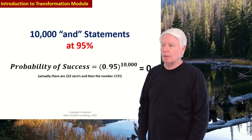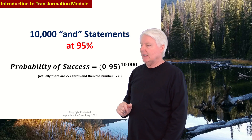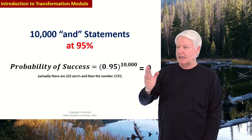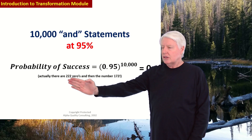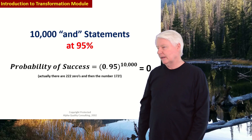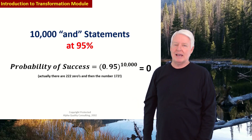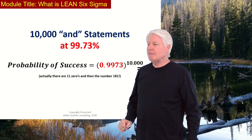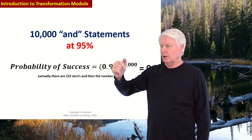Let's plug numbers into the fundamental equation. With 10,000 AND statements at 95% each — that's Two Sigma, approximately 95.44% — the overall probability is essentially zero. There are 222 zeros after the decimal point. At Three Sigma, 99.73% per AND statement to the 10,000th power still results in basically zero — 11 zeros followed by 181. That's clearly not acceptable.